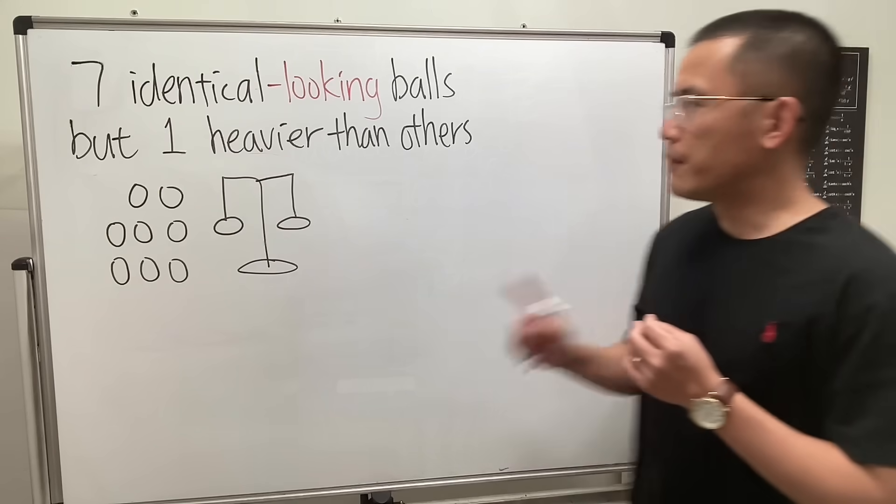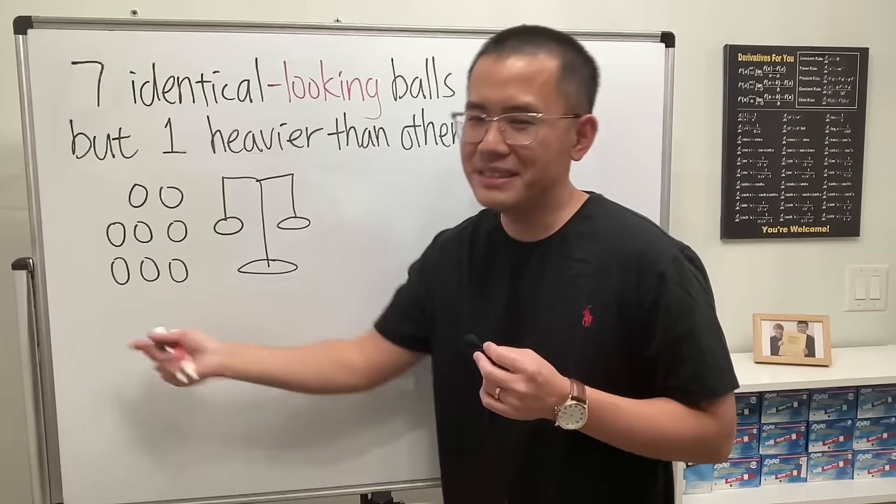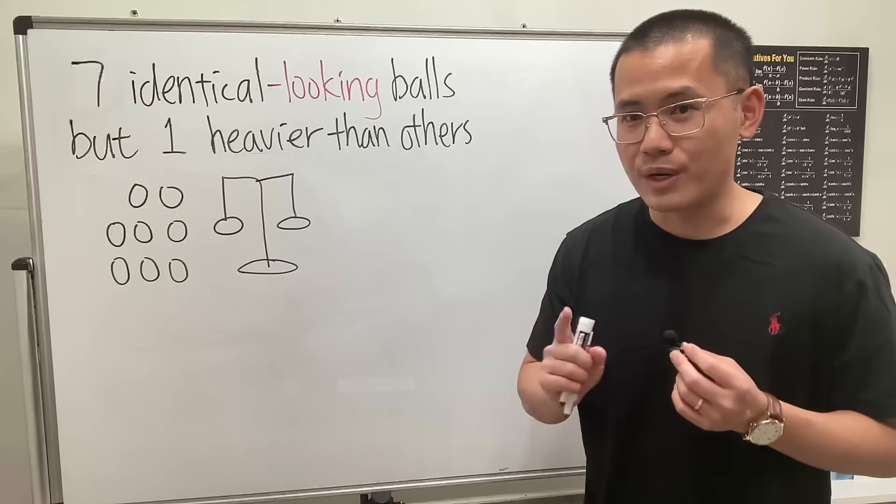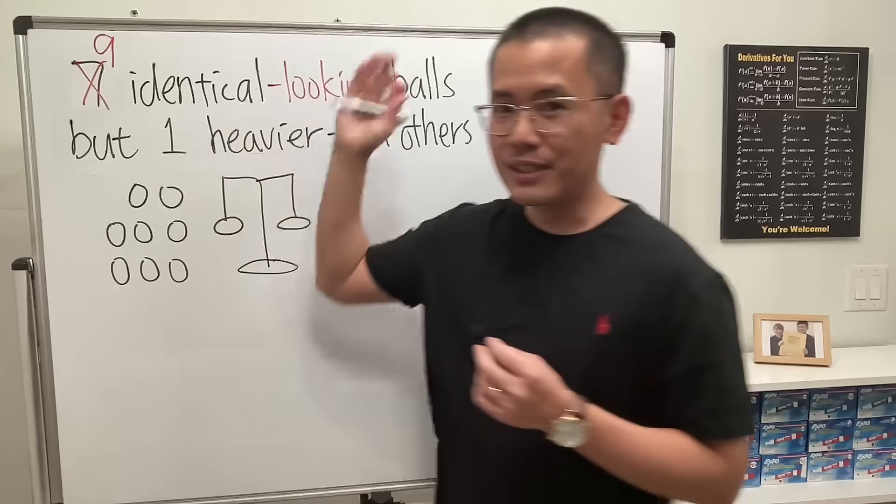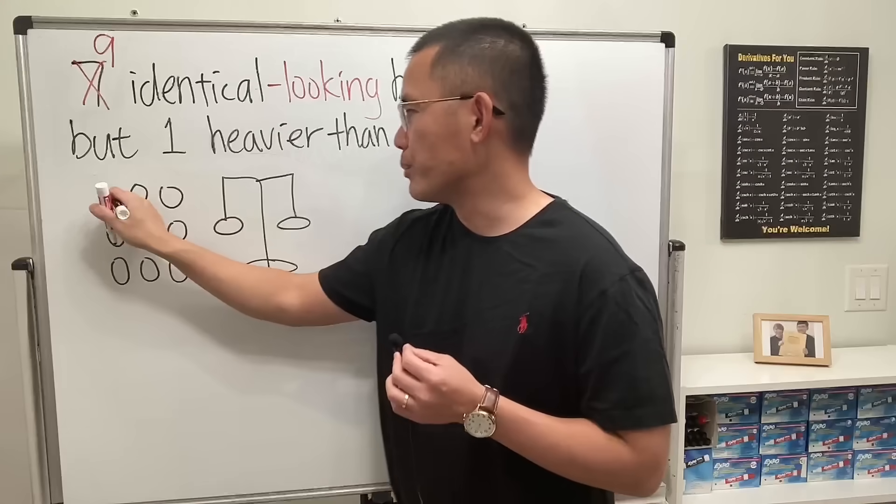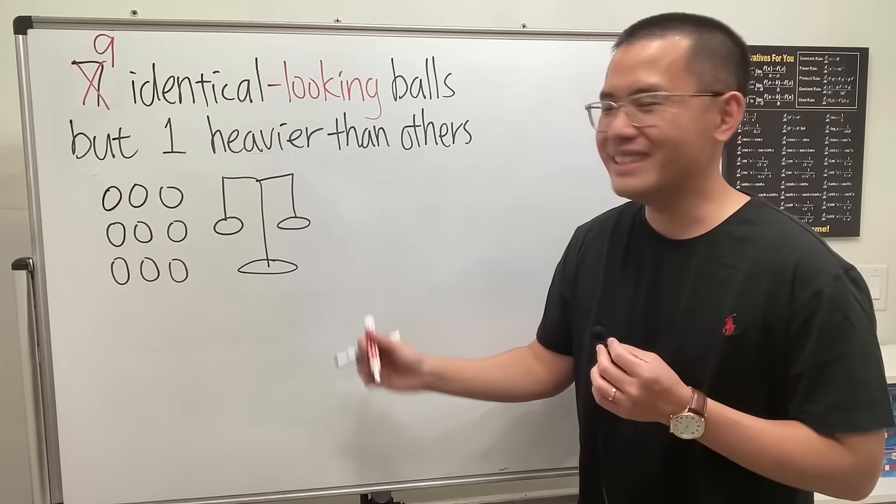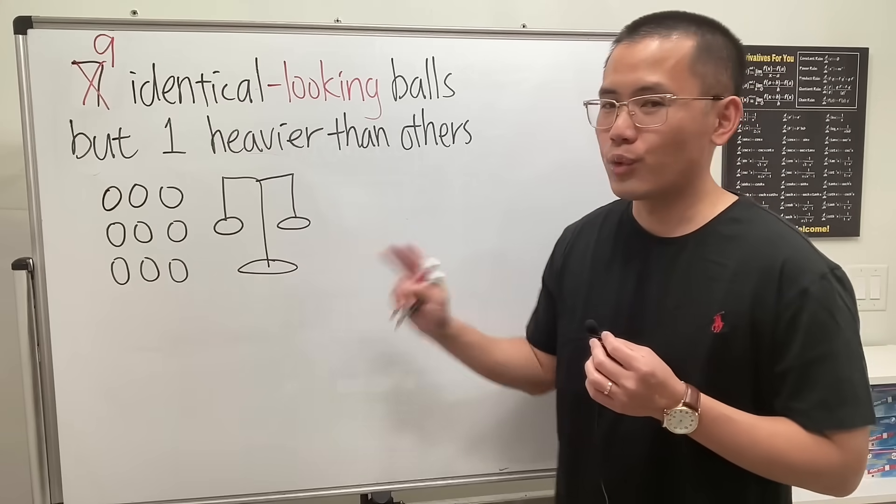Let me clarify this for you. First, seven and eight are of course different. We can actually do up to nine balls, so let's change the question to nine and put down another ball right here. This is the maximum number you can use the scale twice to figure out the heavier ball.